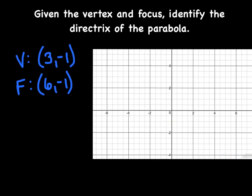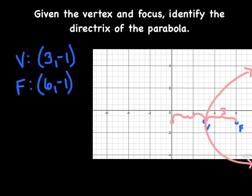Try this one yourself: the vertex is at (3, −1) and the focus is at (6, −1). The focus is on the interior, so the parabola opens to the right. The distance from the vertex to the focus is 3 units, so going back 3 units in the opposite direction puts the directrix at x = 0, right on top of the y-axis.